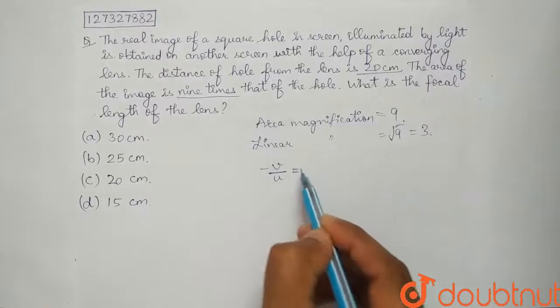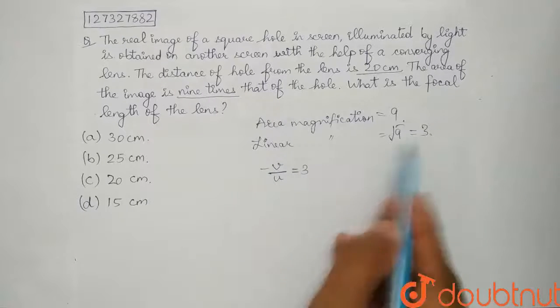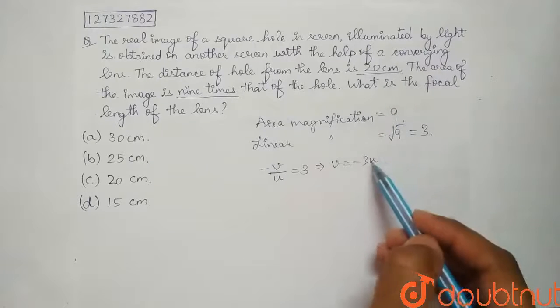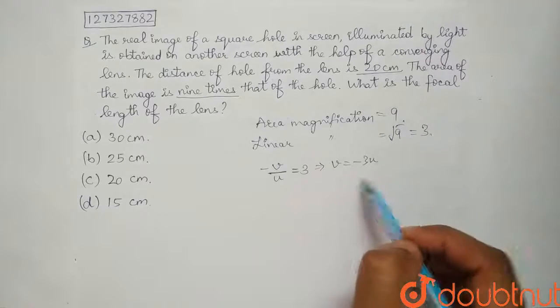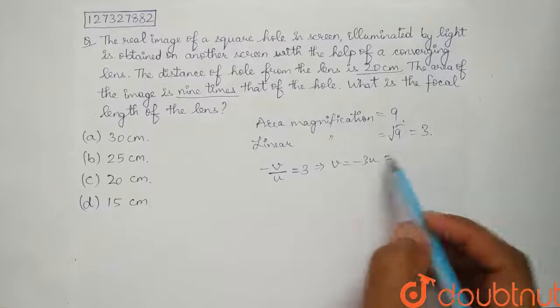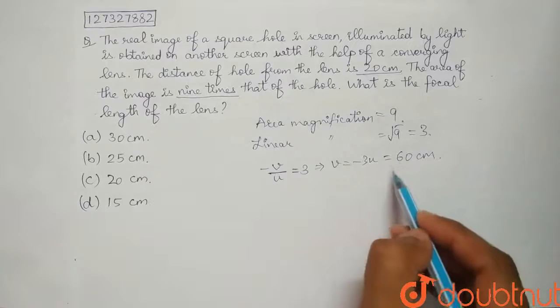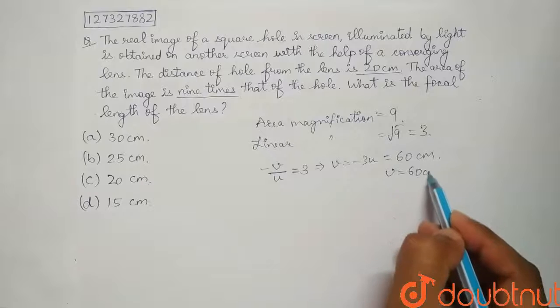So minus 3 equals V by U. The distance is 20 cm, U is minus 20 actually. We know that U is minus 20. So V equals 60 cm. V is 60 cm.